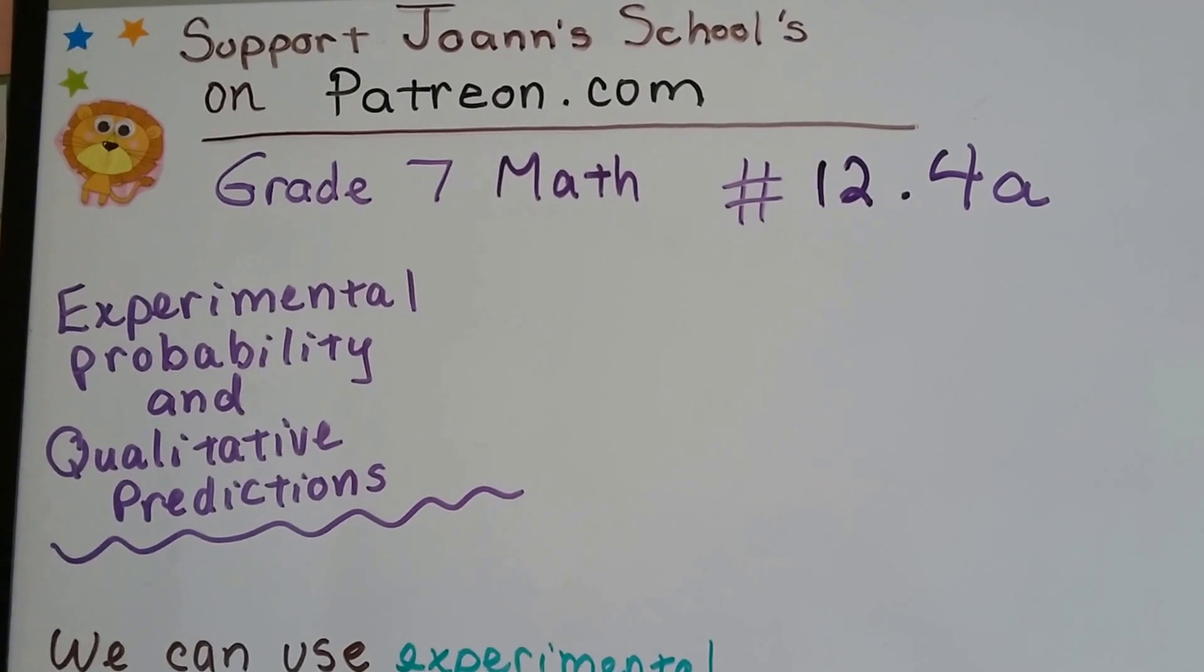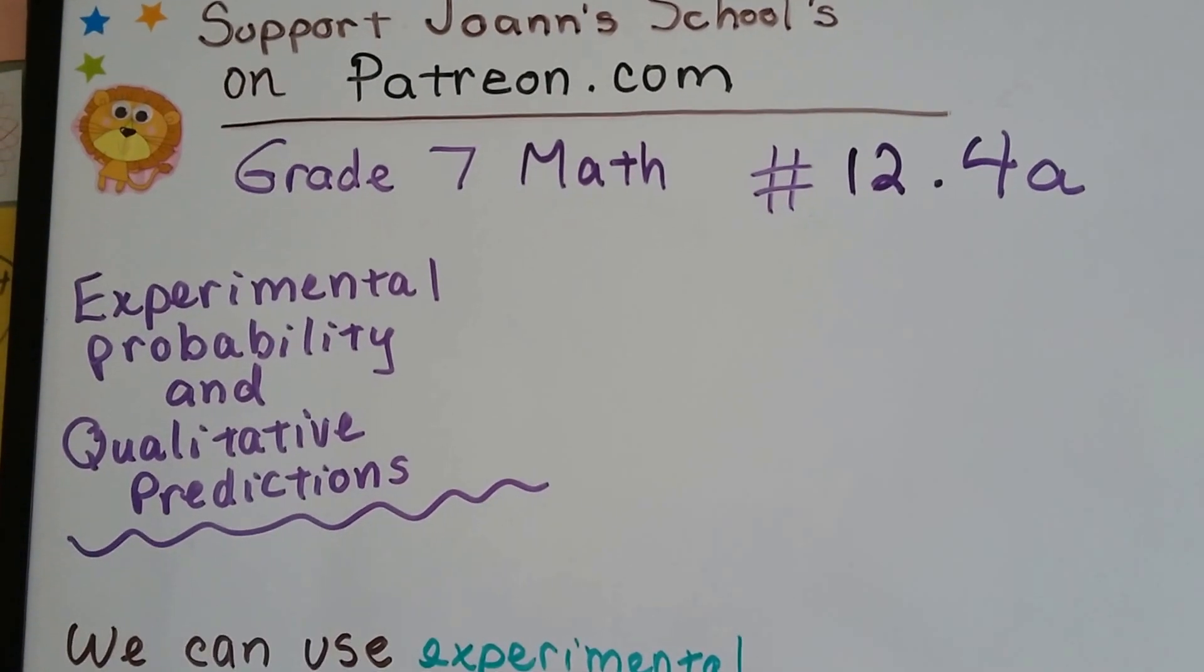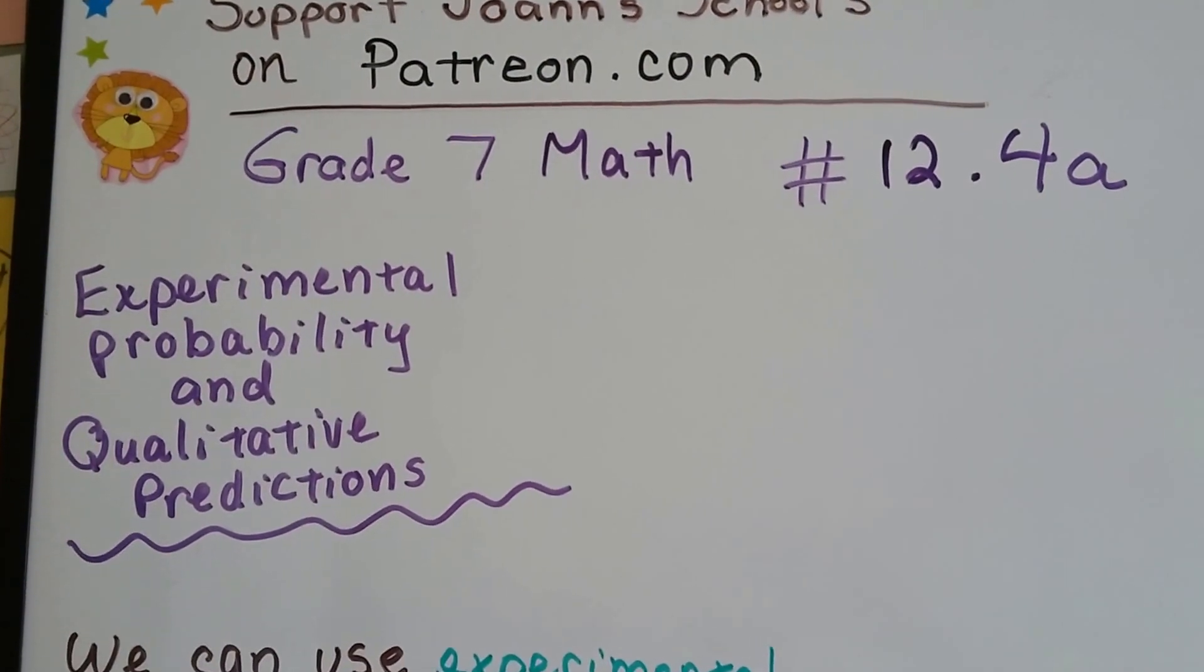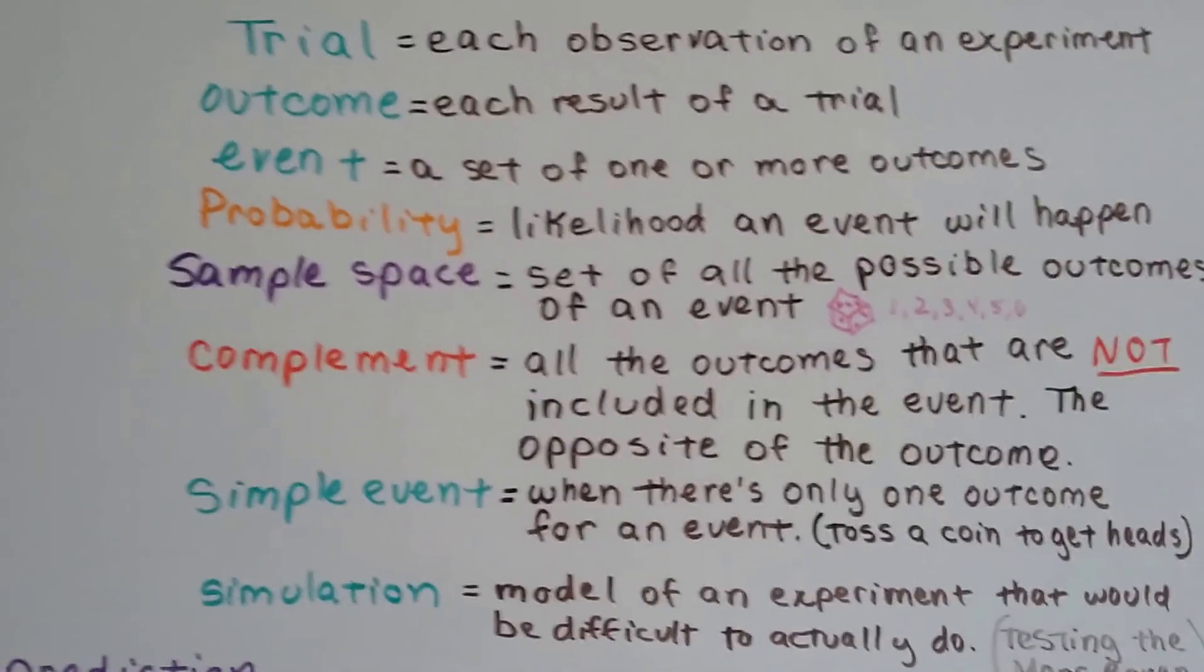Grade 7 math number 12.4a, Experimental Probability and Qualitative Predictions. I'm going to go over the definitions real quick as I promised in the last video.